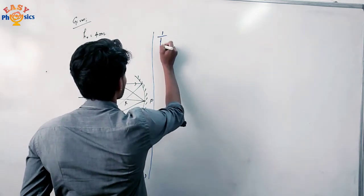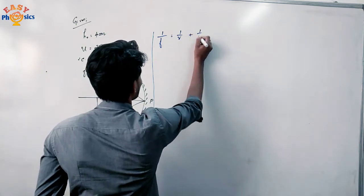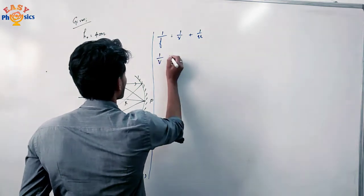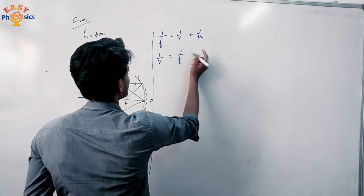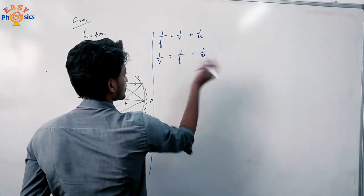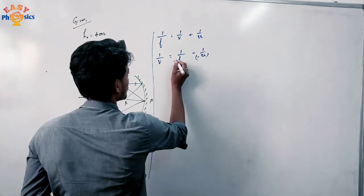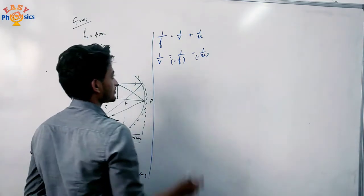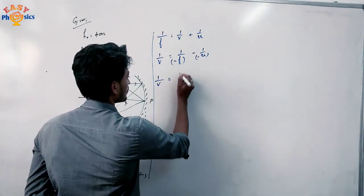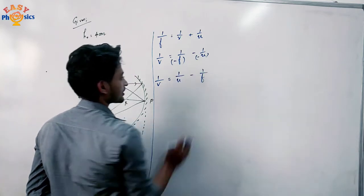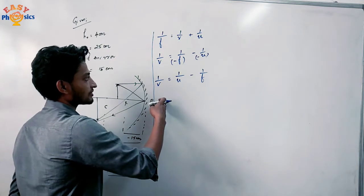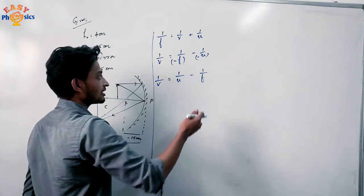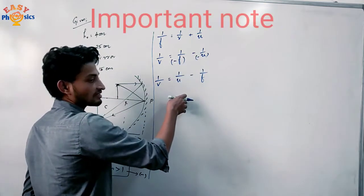The formula is 1/f = 1/v + 1/u. So 1/v = 1/f − 1/u. We have to apply the sign convention. Because it is a concave mirror, both focal length and object distance are negative. So 1/v = 1/u − 1/f. We will add the sign convention and then substitute values.